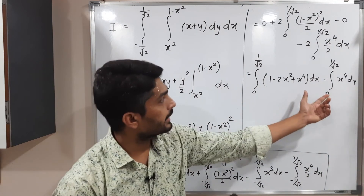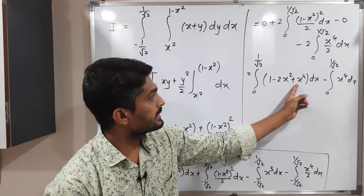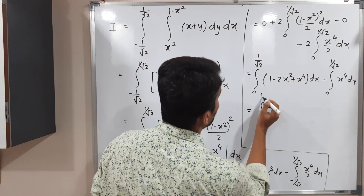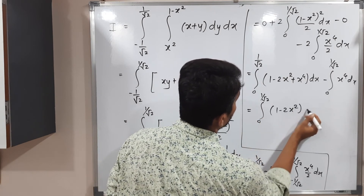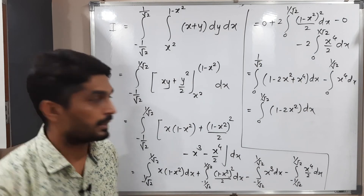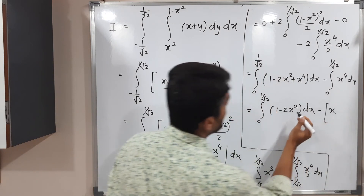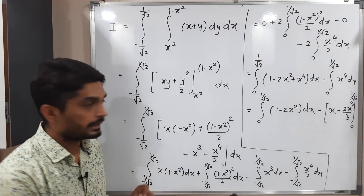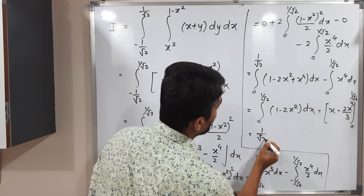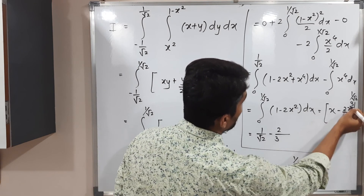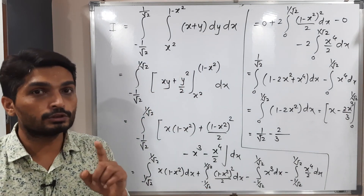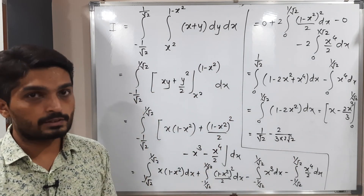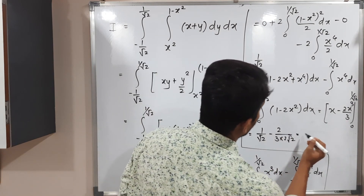The x⁴ terms cancel each other, so we have ∫₀^{1/√2} (1 − 2x²) dx. Integrating: x − (2x³/3), evaluated from 0 to 1/√2. Putting the upper limit: 1/√2 − (2/3)(1/√2)³. Now (1/√2)³ = 1/(2√2), so this becomes 1/√2 − 2/(3·2√2) = 1/√2 − 1/(3√2).